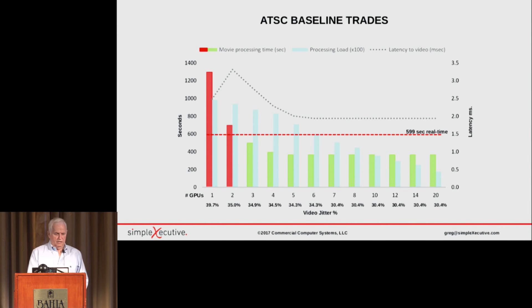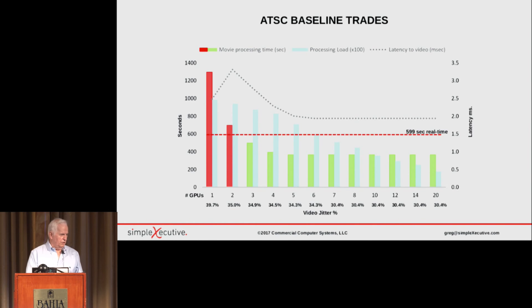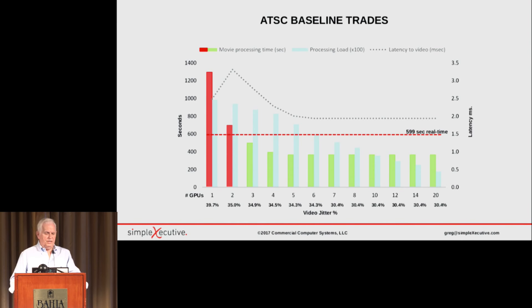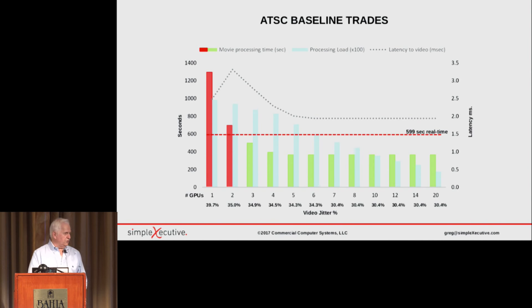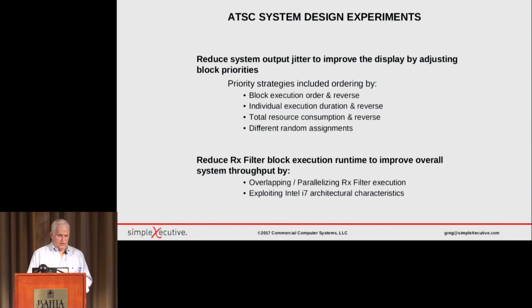Once we had this data correlated and had confidence that our model agreed with the raw data, we went back and plotted it. In our model, we changed things: what happens if you ran all of this on one processor versus six, which is what Marcus ran it on? You see the number of processors across the bottom. What we noticed right away is that adding processors, once you hit a knee in the curve, doesn't help. We also plotted the output jitter and the latency — how long it takes from a sample entering the system until it comes out. The red dotted line shows the sample problem we applied: a 10-minute movie animation, run over and over again to conduct these experiments.